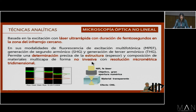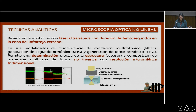Esta es una técnica que se basa en un láser ultracorto y ultrarápido, que está dentro del rango espectral del infrarrojo cercano. Tiene tres modalidades: la fluorescencia por excitación multifotónica y las generaciones del segundo y el tercer armónico. Lo que permite esta técnica es determinar de una forma precisa la estructura y la composición de los materiales multicapas de una forma no invasiva con una resolución micrométrica.